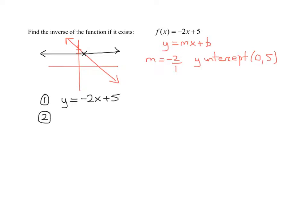Step two is interchange x and y. Wherever you see a y, put an x. Wherever you see an x, put a y. So I get x equals negative 2y plus 5.